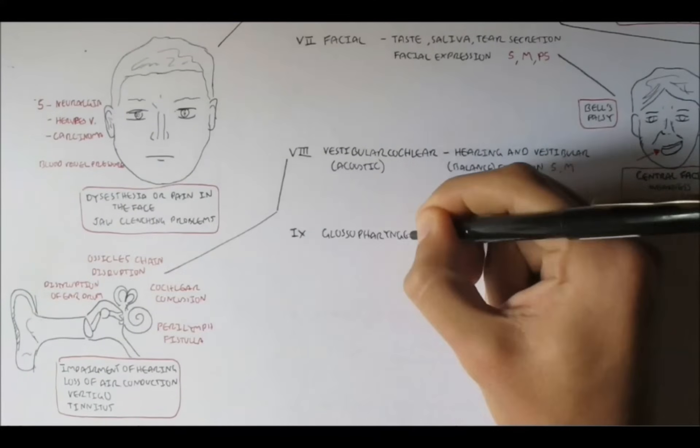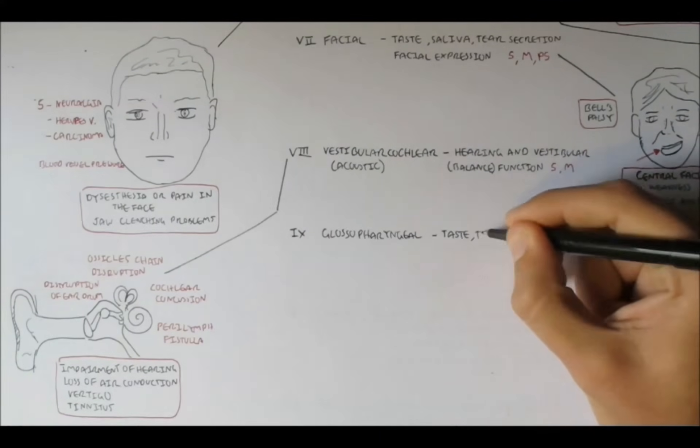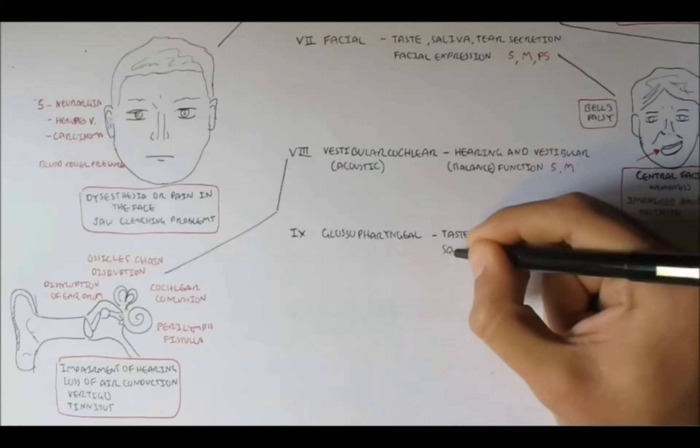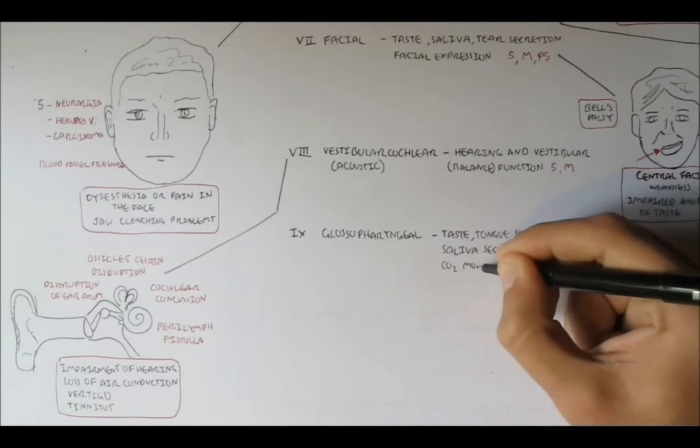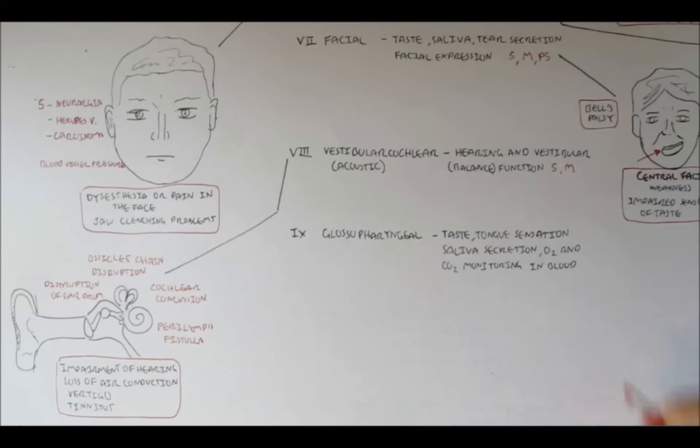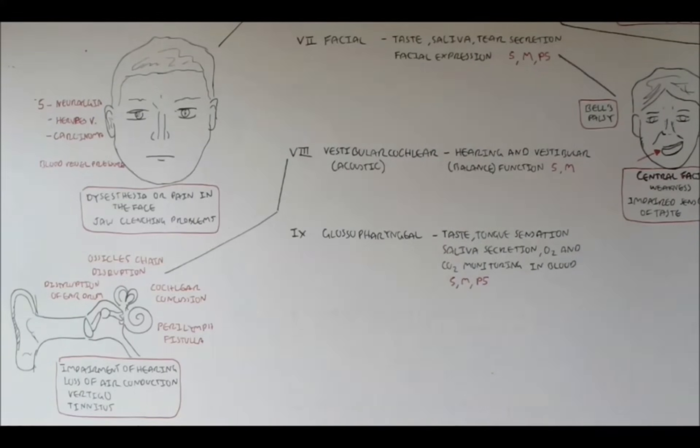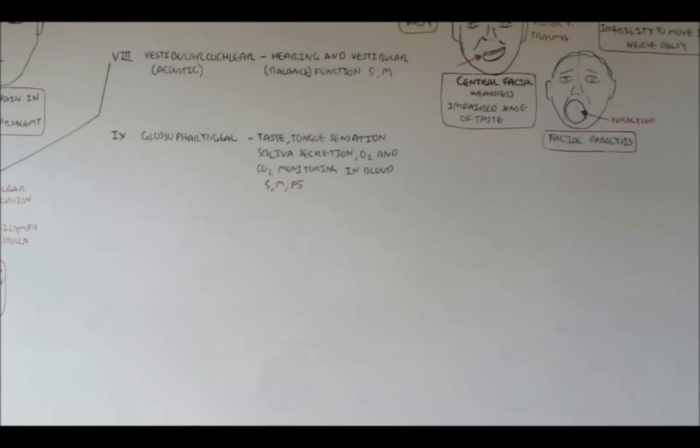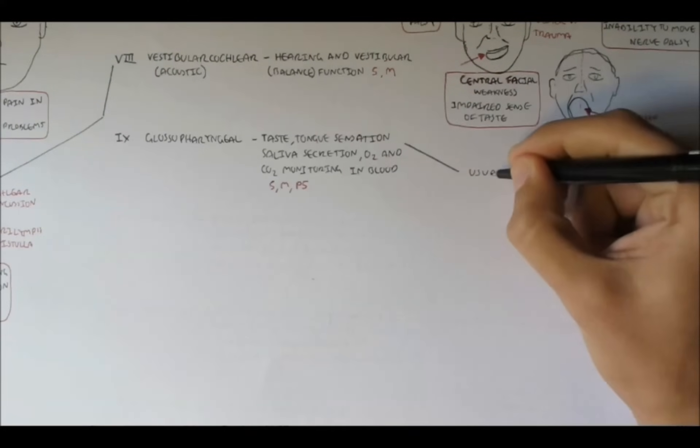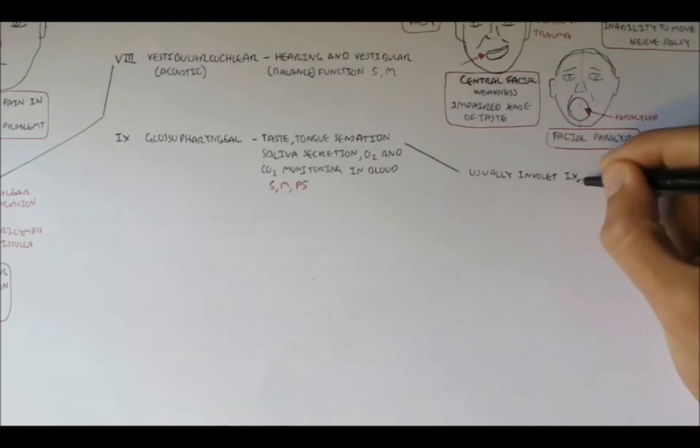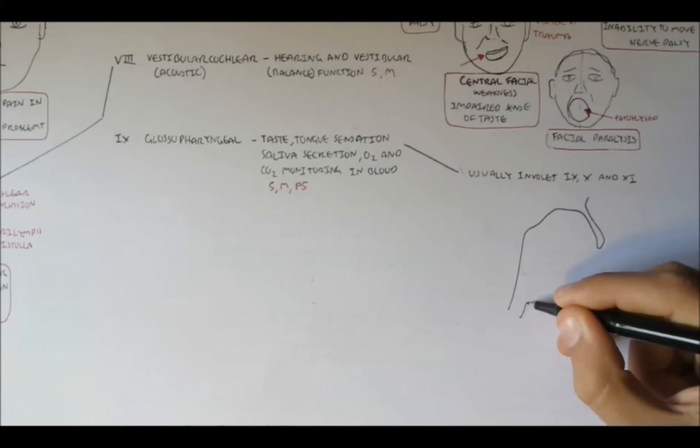Nerve 9 is the glossopharyngeal nerve, which has many functions, including taste, tongue sensation, saliva secretion, and also oxygen and carbon dioxide monitoring in the blood. So it's a motor and sensory nerve, and also a parasympathetic nerve as well. Damage to this nerve is usually a combination of damage to nerve 10 as well as nerve 11. But of course, this particular nerve, the glossopharyngeal nerve itself, can be damaged.